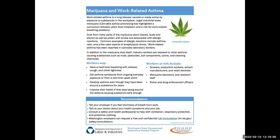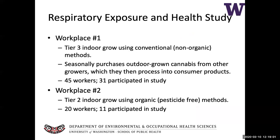A hazard alert highlighting the risk for asthma in cannabis workers was issued by the Washington State Department of Labor and Industries. The study that we undertook took place at two cannabis producer-processors in Washington State, both of whom grow cannabis indoors. The first facility was a tier three indoor grow operation — tier three is the largest size of producer in Washington State, licensed to grow up to 30,000 square feet of plant cannabis.